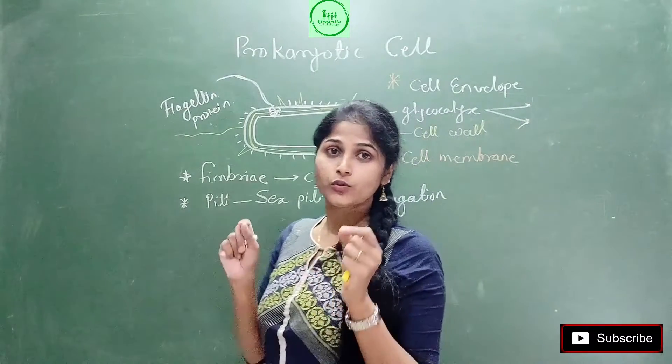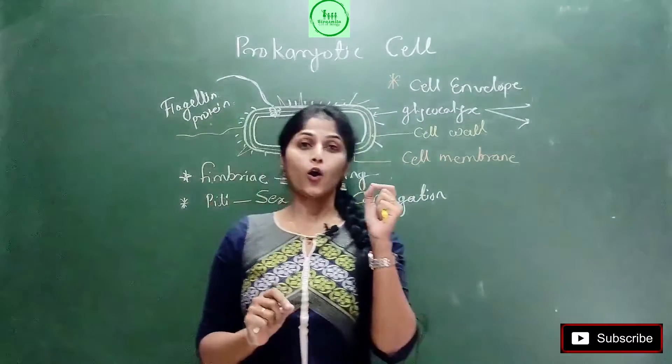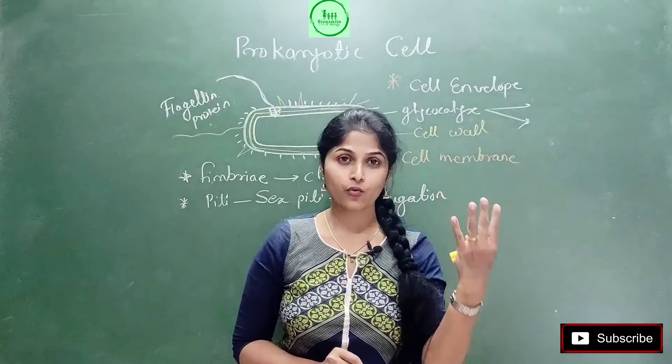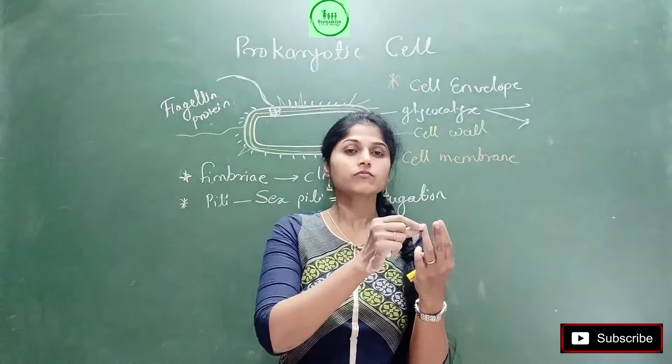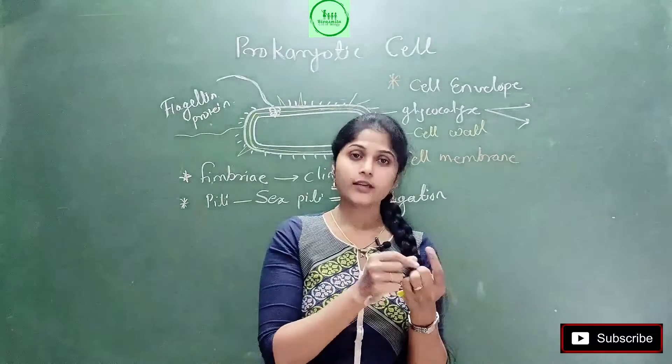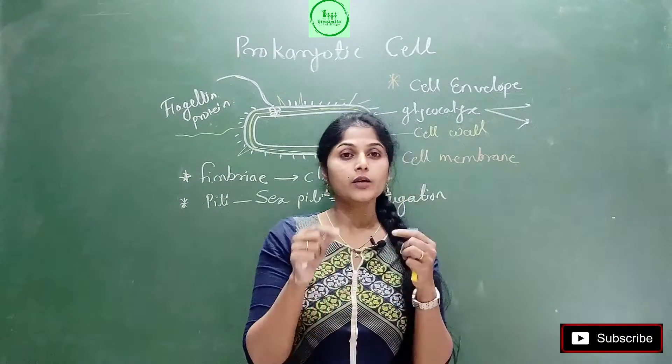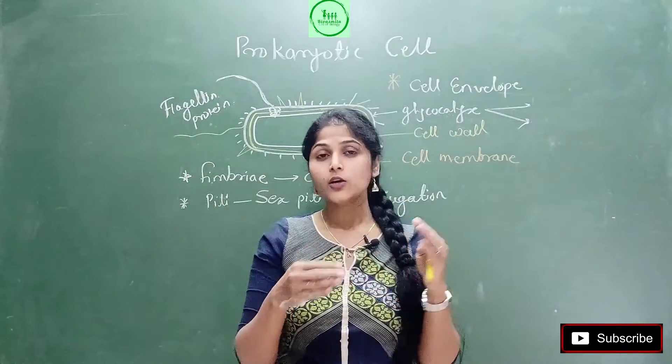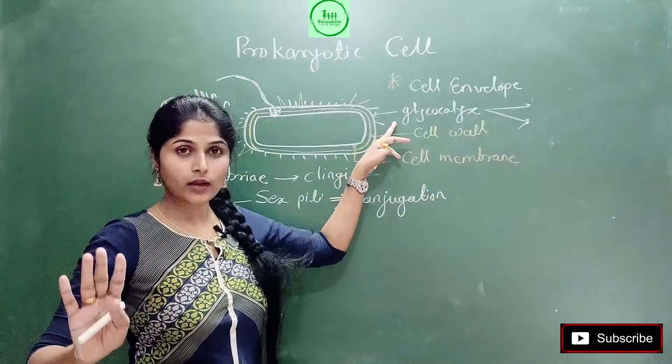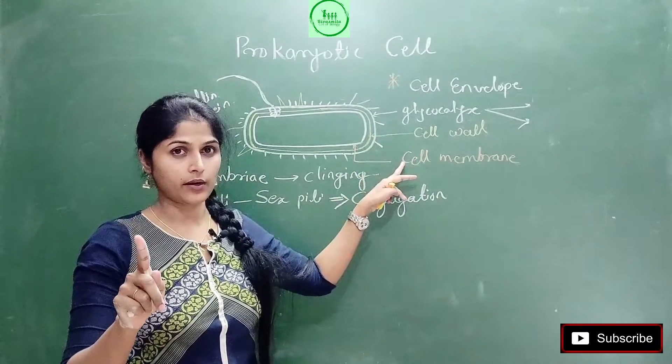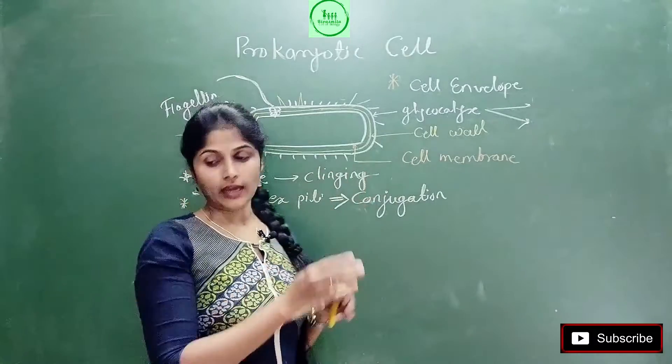So see, what we have learned up to now. We have learned that on the cell envelope, there are four appendages: flagella, cilia, fimbriae, and pili. Now we will see the inner part. We have done with the glycocalyx, cell wall, as well as cell membrane, right? But what is inside this cell membrane?